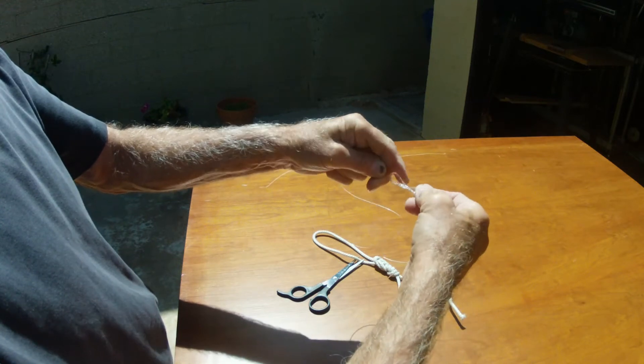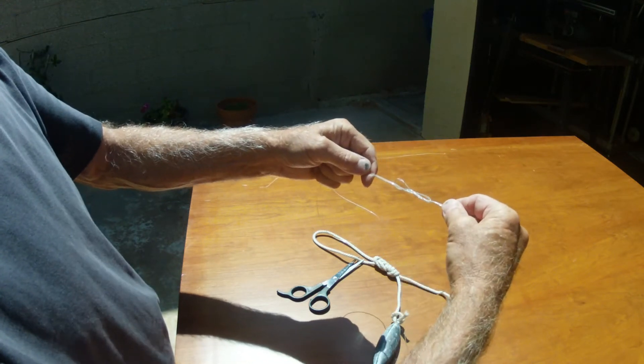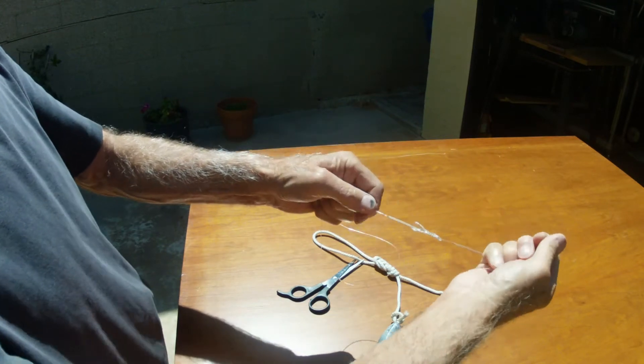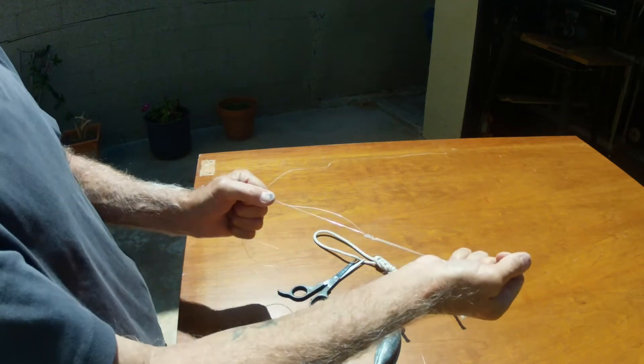Just kind of tinker around a little bit, tighten it up. That is going to be the strongest dropper loop that I have come across. I really like this. I've got a tester.